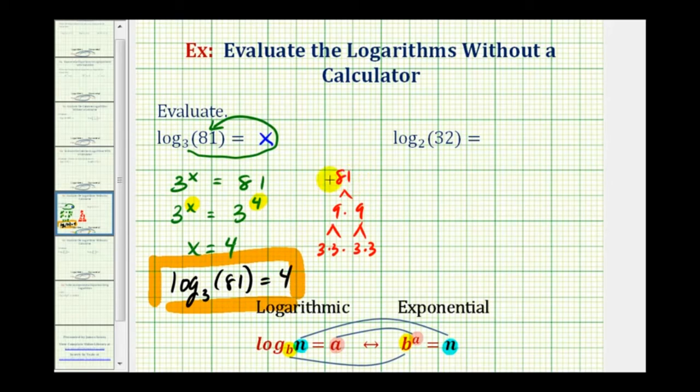Let's take a look at a second example. We'll set this equal to a variable, let's say y. Write this as an exponential equation. So 2 is the base, y is the exponent, and the number is 32. So 2 to the power of y must equal 32.